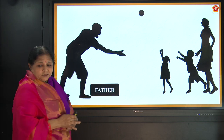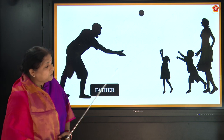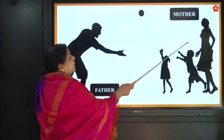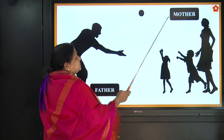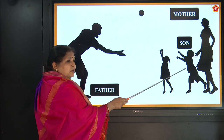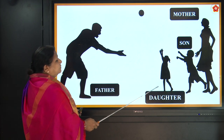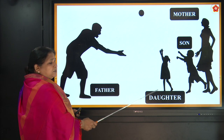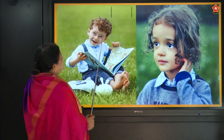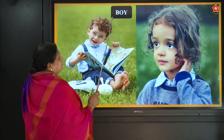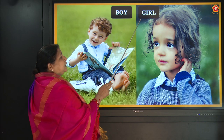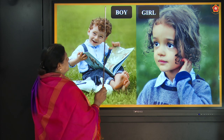This is a father. Father is masculine gender. Then mother — feminine gender. This is son, again masculine, and daughter is feminine. Boy and girl — masculine and feminine.